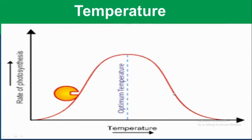Temperature is one factor that affects both the light-dependent and the light-independent stages of photosynthesis.